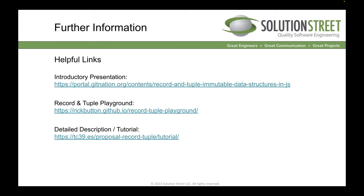Now we can use a record as a Map key. Using that same latitude/longitude example, I can now use a separately declared record with the same latitude and longitude values to retrieve 'Chantilly' or 'Cincinnati' from the map. For helpful links: there's a great introductory presentation by one of the proposal authors — about 25 to 30 minutes long with much more detail. There's also a playground where you can try records and tuples in a JavaScript REPL, and a more detailed description of the proposal.